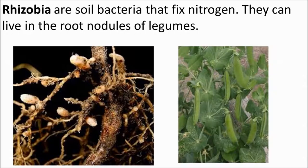Nitrogen gas can be converted to nitrate compounds by nitrogen-fixing bacteria, which live in the soil or in root nodules — those little swellings on roots. These bacteria can live in root nodules of leguminous plants, or legumes, such as peas, beans, and clover. These plants are absolutely fantastic for adding nitrogen to the soil, so if your soil is lacking nutrients, legumes are perfect.